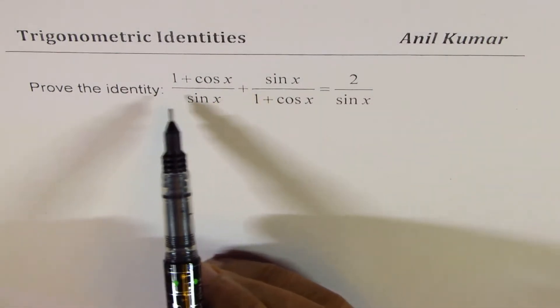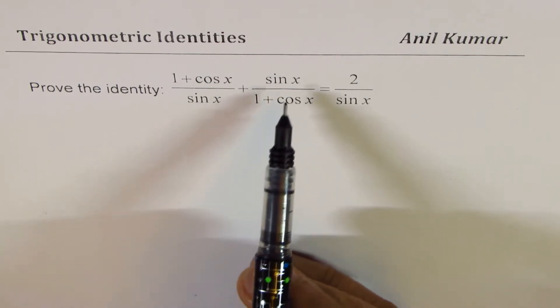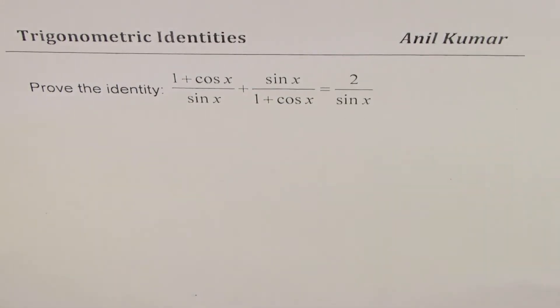1 plus cos x divided by sin x plus sin x divided by 1 plus cos x equals 2 divided by sin x.